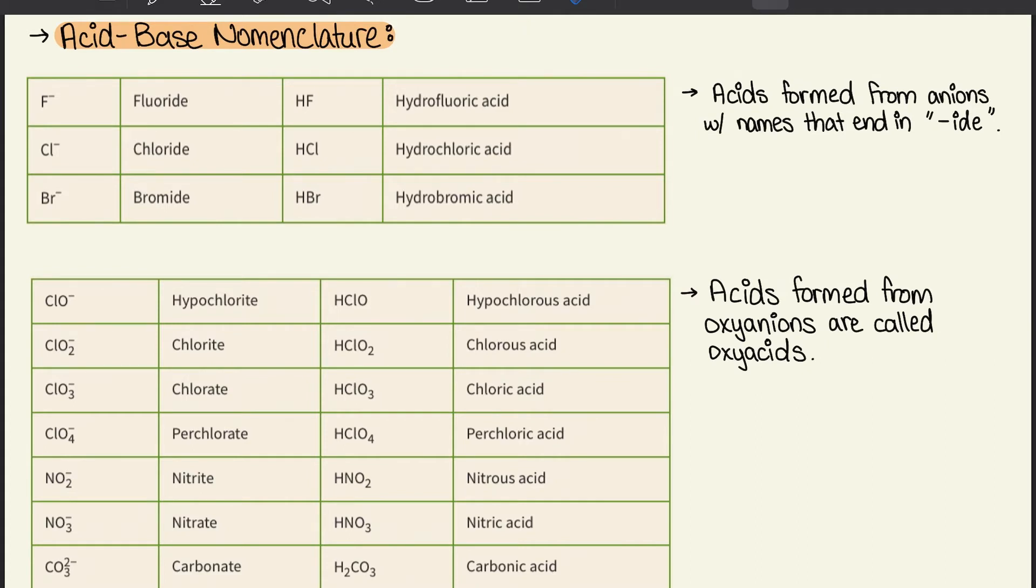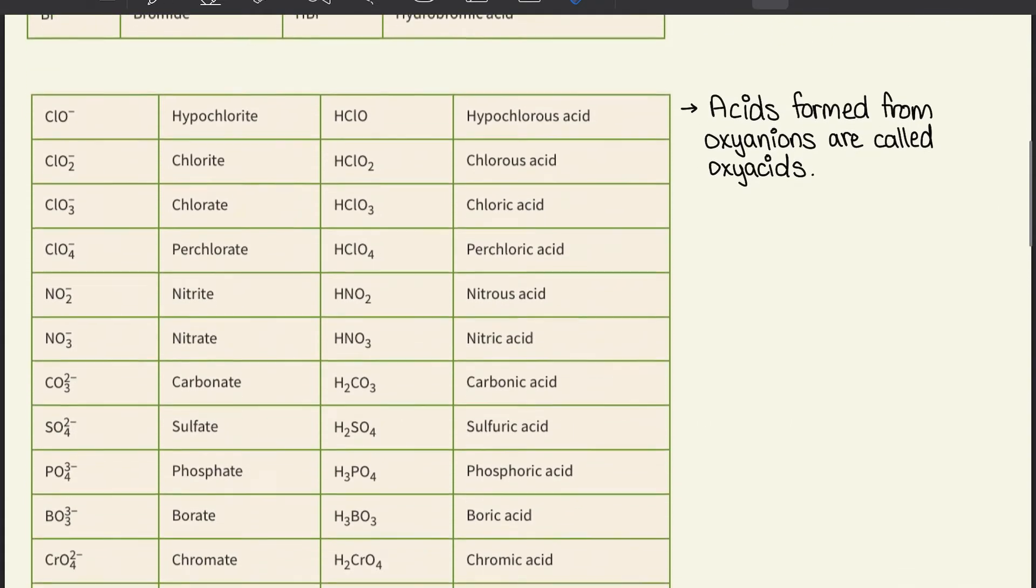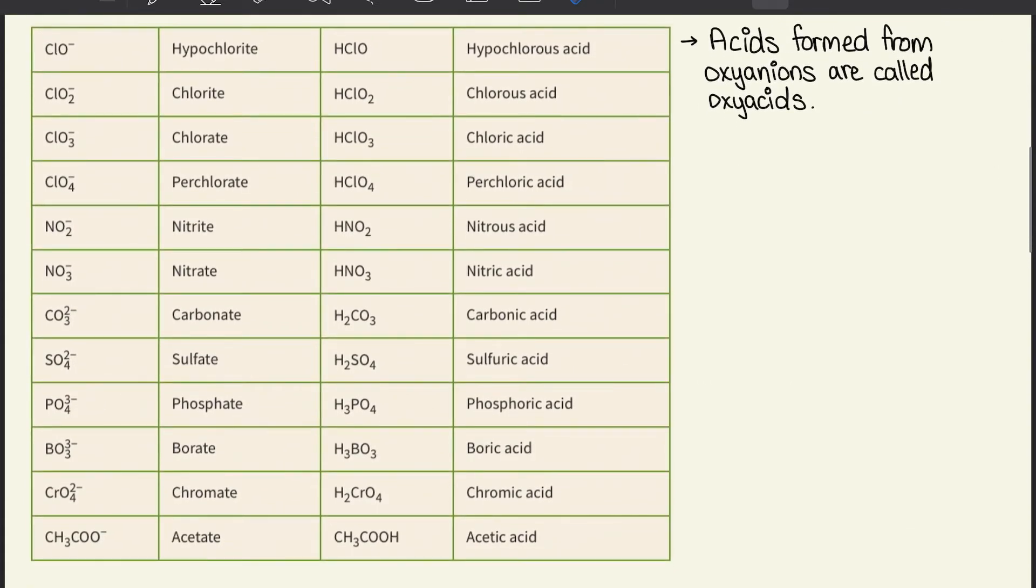Then we have acids formed from oxyanions, which are called oxyacids. Just have a look over this and make sure you're comfortable and familiar with naming each of these. The best way that worked for me was making flashcards. But whatever works for you, make sure you have these names down.